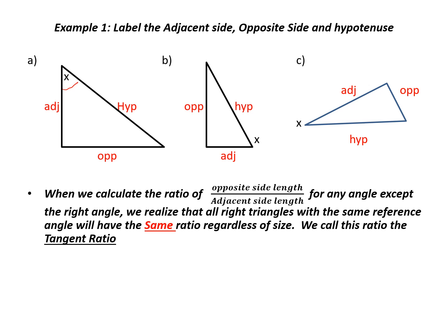Now what you will notice is that when we calculate the ratio of the opposite side divided by the adjacent side for any angle except for the right angle, what we realize is that all right triangles regardless of their size with the same reference angle will always have the same ratio. We call this the tangent ratio.